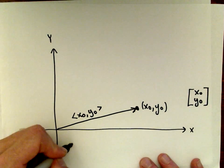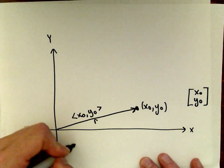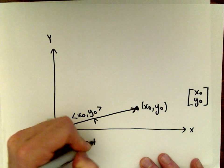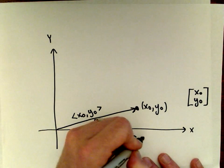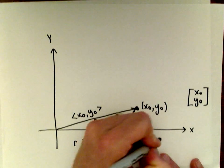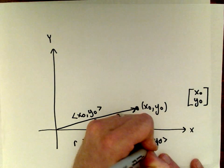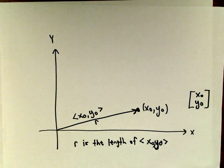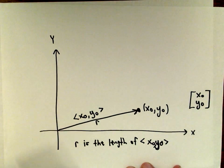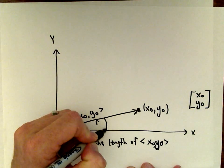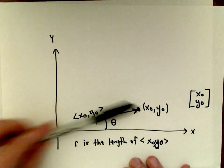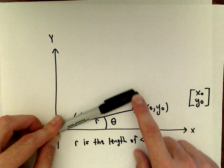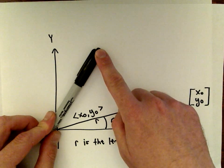One thing I'm going to do is let R be the length of that vector x₀, y₀. So the idea is this vector x₀, y₀ makes an angle — we'll just call that angle theta — and what we're going to do is take this point and rotate it some angle phi.